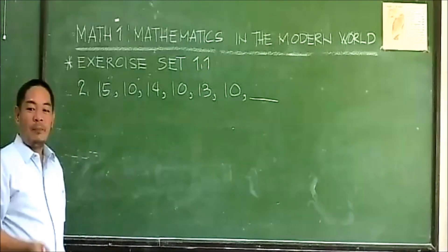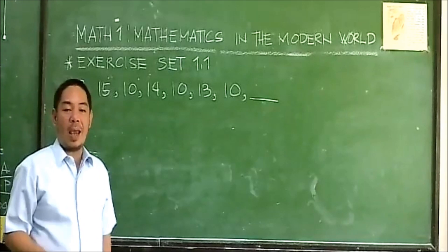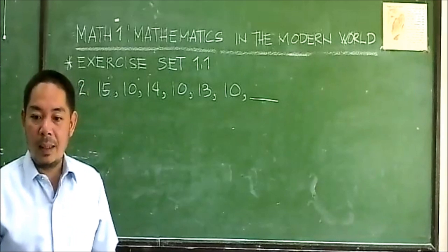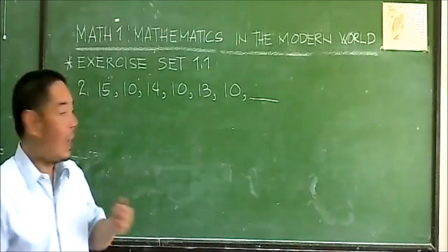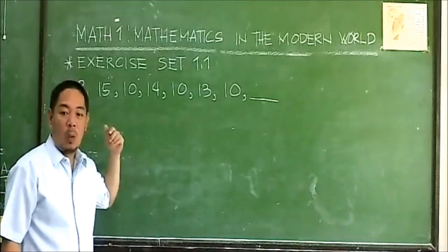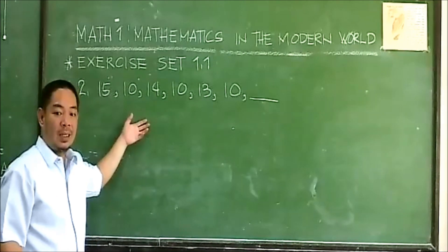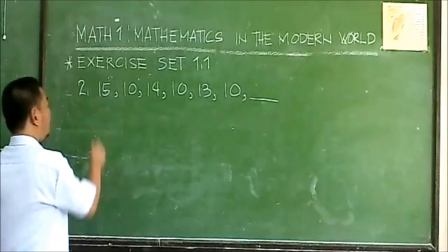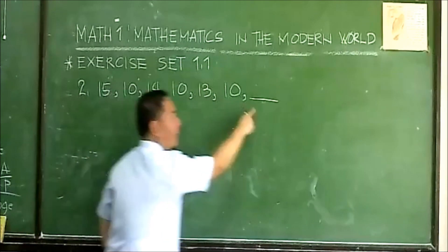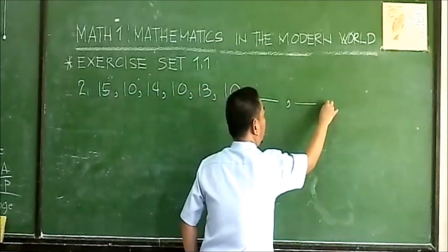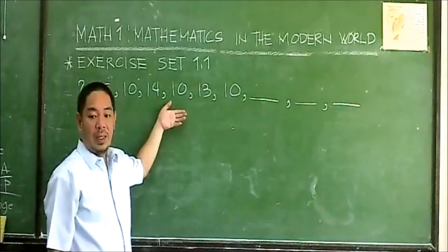To solve any pattern, you must be a good observant and you have the ability to interpret these patterns into a mathematical equation. So let's solve this pattern. The sequence is: 15, 10, 14, 10, 13, 10, and so on. We need to find the next three terms of the pattern.